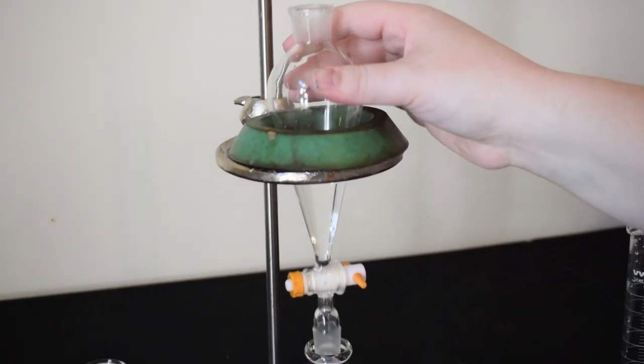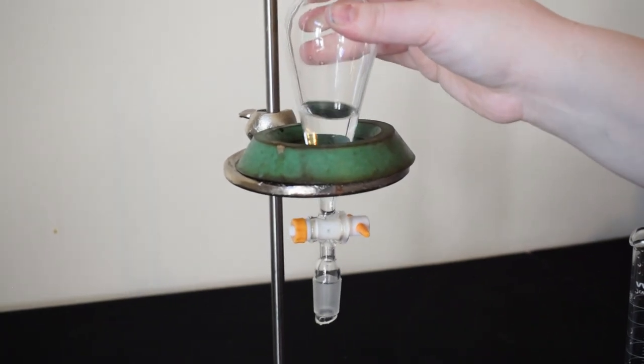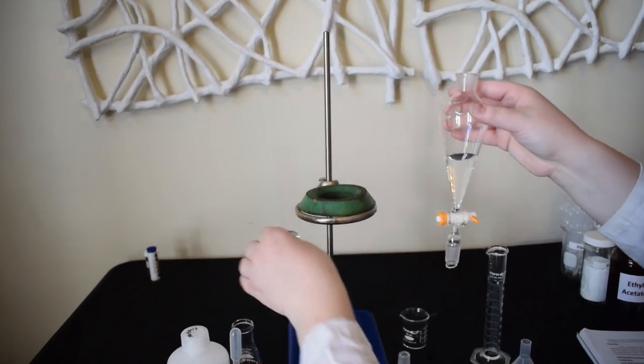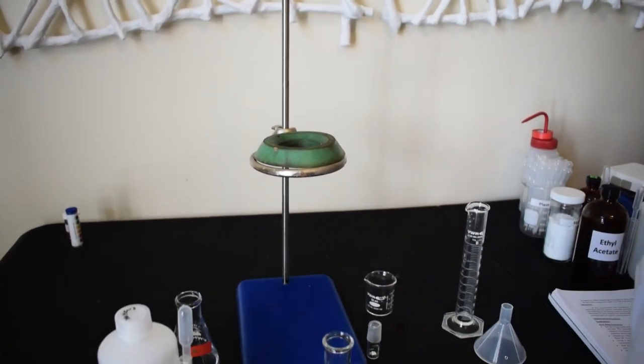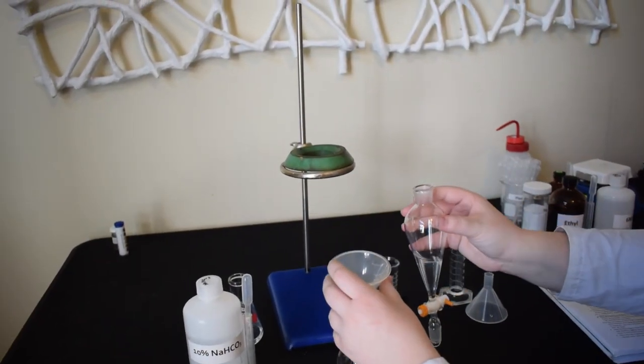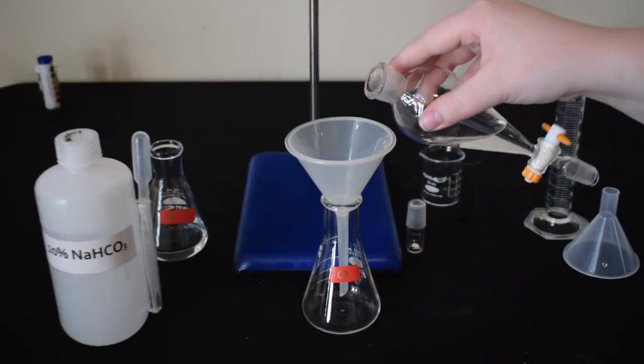Once the aqueous layer has been drained from the bottom, we are going to remove the sep funnel from the iron ring and pour the organic layer out the top of the sep funnel. This is to avoid contamination through the stopcock.